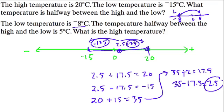So how far do we go? Well, we want 8 degrees to reach 0 and then another 5. That's 15 degrees. So that's the halfway point. That means to get to the high temperature, we have to go up another 15. And that brings us to 20 degrees.